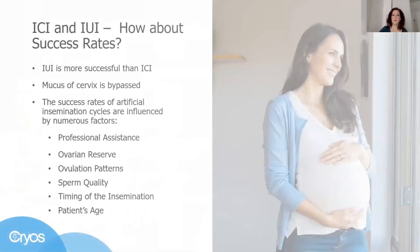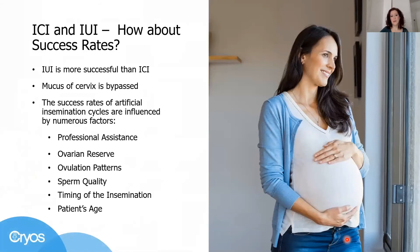If we directly compare ICI and IUI in terms of success rates, intrauterine insemination is slightly more successful. This might be the case because washed sperm is used, where the best and fastest-moving sperm have already been selected, and it is placed directly into the uterine cavity — a little bit closer to the egg — bypassing the cervix and its mucus, negating any problems related to that.